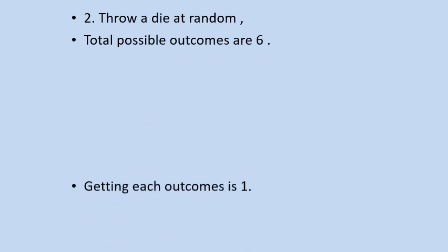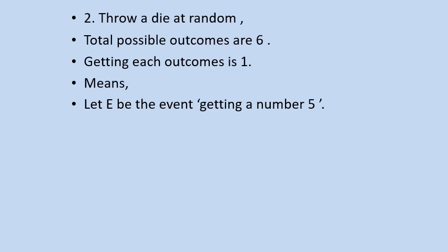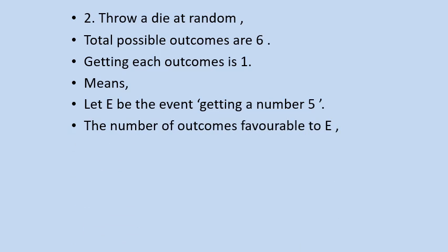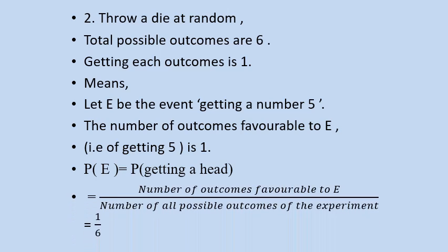Throw a die at random — total possible outcomes are 6, getting each outcome is 1. Let E be the event of getting the number 5. The number of outcomes favorable to E, that is getting 5, is 1. So probability of E — that is probability of getting number 5 — equals total number of outcomes favorable to E upon number of all possible outcomes of the experiment. So here getting 5 is 1 and total possible outcomes are 6. So probability of getting number 5 is 1 by 6.